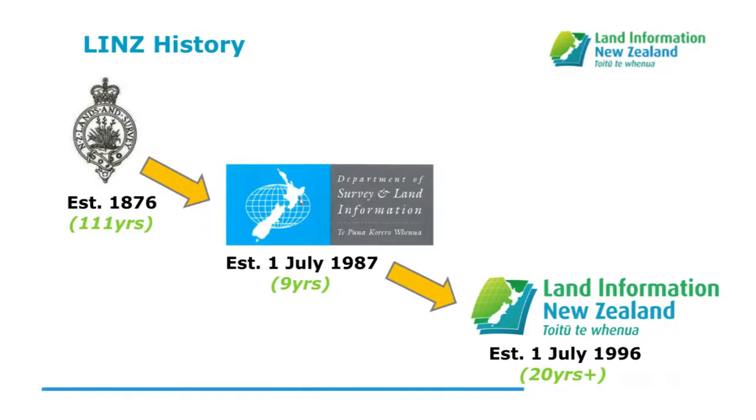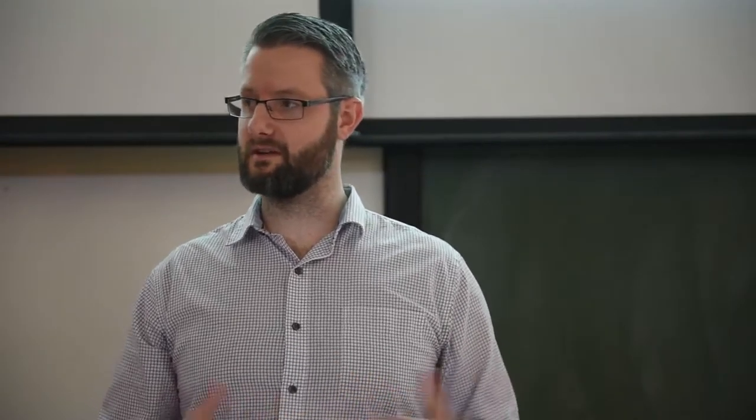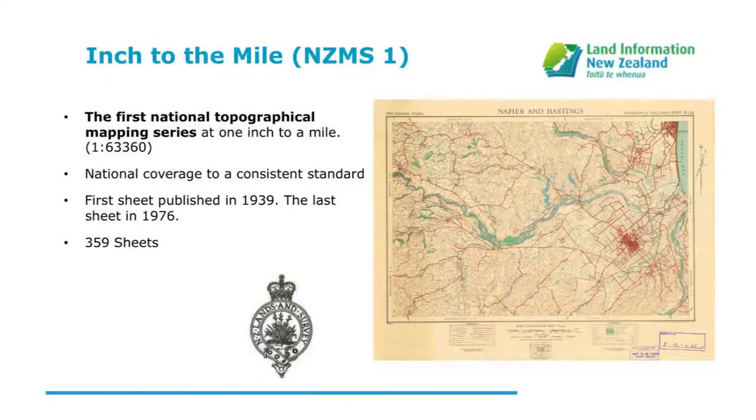LINZ has a very deep history in making maps. We were established first in 1876, and that was the Department of Lands and Survey, and that existed for 111 years, which is an amazing amount of time in itself. You heard the story of the transition into DOSLI from Chris yesterday, and that lasted for about nine years. And LINZ, in fact, celebrated its 20th anniversary just this July gone.